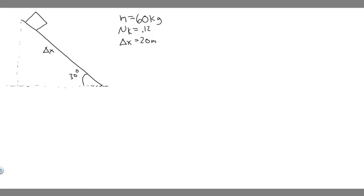In this problem, we're told a student of mass 60 kilograms, starting from rest, slides down a slide 20 meters long, tilted at an angle of 30 degrees with respect to the horizontal. If the coefficient of kinetic friction between the student and the slide is 0.12, find A, the force of kinetic friction, B, the acceleration, and C, the speed she's traveling when she reaches the bottom of the slide.